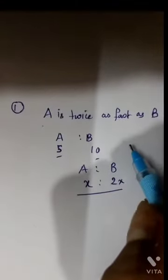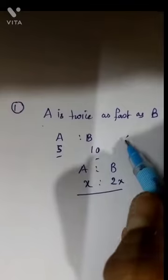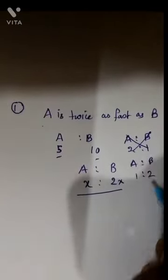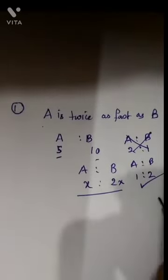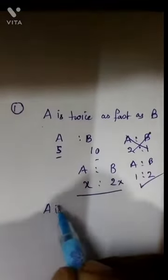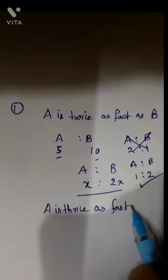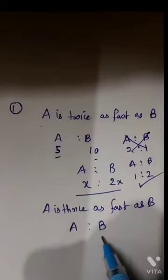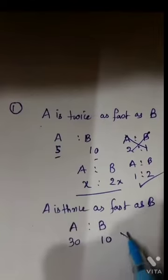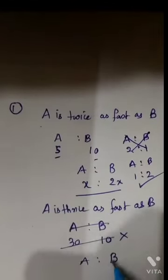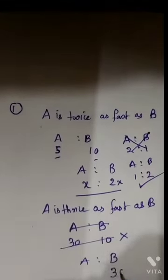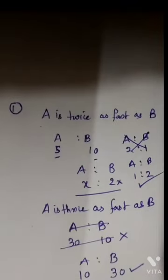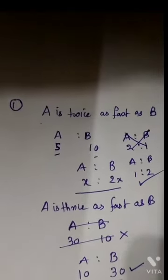Dear students, A is to B is not 2 is to 1 — that is wrong. A is to B being 1 is to 2 is correct. Similarly, if A is thrice as fast as B, it means if B does the work in 30 days, A will do it in 10 days. So the ratio A is to B is 1 is to 3. Hope it is clear.